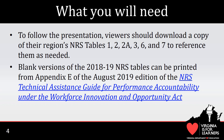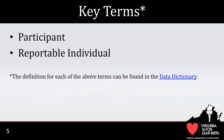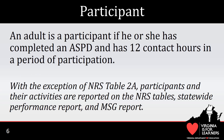Be sure to download the 2018-19 version and not the 2017-18 version, which is still available. A couple of terms you need to know for our discussion of NRS Tables are Participant and Reportable Individual. For the purposes of reporting, an adult student is counted as a participant if he or she has completed an ASPD and accumulated 12 or more contact hours in a period of participation, or POP.